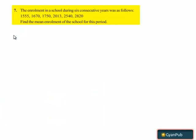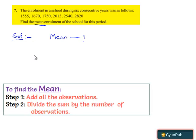Now let's move on to the solution. Here they have asked us to find out the mean. Mean can be obtained by dividing the sum of all the observations by number of observations.